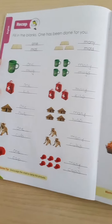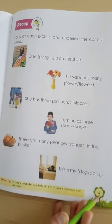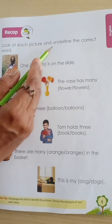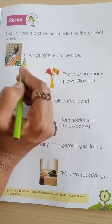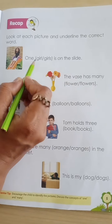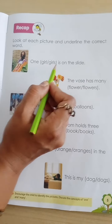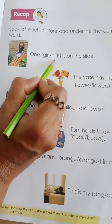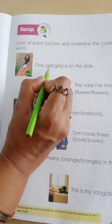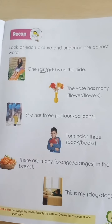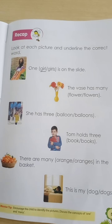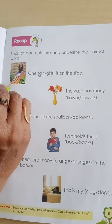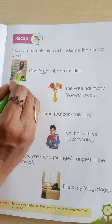Now come to the next page, page number 5. Here we have to look at each picture and underline the correct word. Now here, one girl is sitting on the slide, so here we will underline girl, G-I-R-L. If there are many girls, then we will write G-I-R-L-S. So one girl is on the slide.